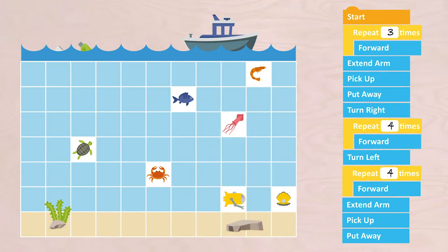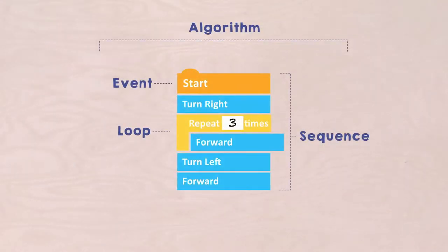But how will the robot know that it is a piece of plastic and not a fish or a crab? Let's make the algorithm a little smarter by adding an instruction that is going to determine if a sequence should or should not be executed.